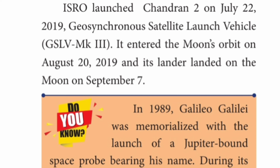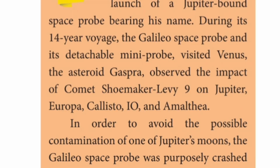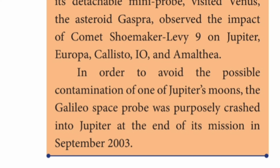In 1989, Galileo Galilei was memorialized with the launch of a Jupiter-bound space probe bearing his name. During its journey, its detachable mini probe visited Venus, the asteroid Gaspra, and observed the impact of comet Shoemaker-Levy 9 on Jupiter. The mission ended in 2003.